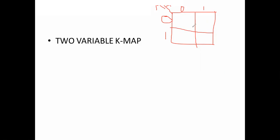The cell values are: this cell is the 0,0 combination so the value is 0; this cell is 0,1 so the value is 1; this cell is 1,0 so the value is 2; and this cell is 1,1 so the value is 3. In yesterday's class we took examples on min terms, that means sum of product terms, and how to minimize the boolean expression for a two variable expression.